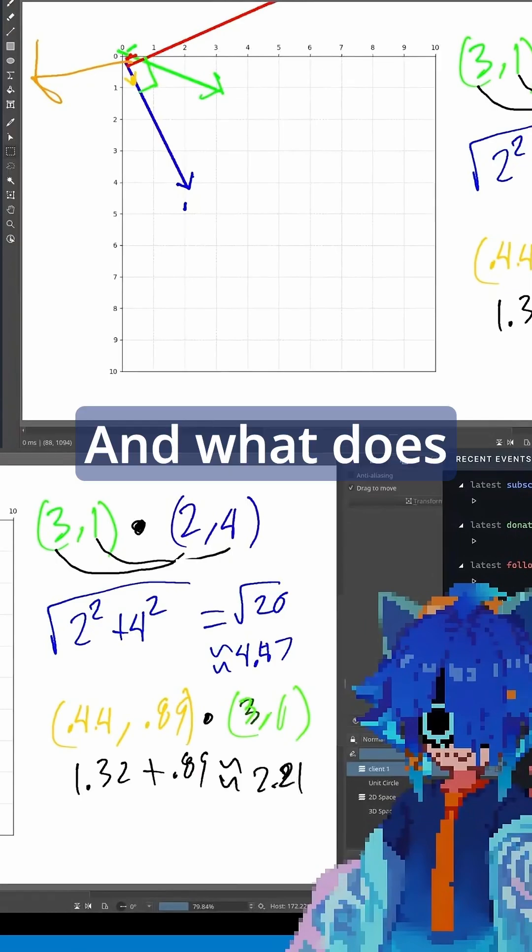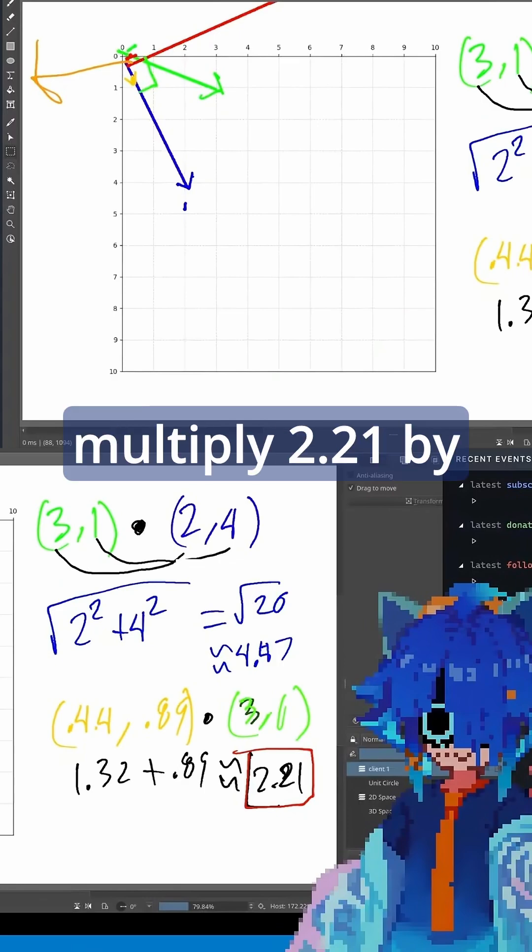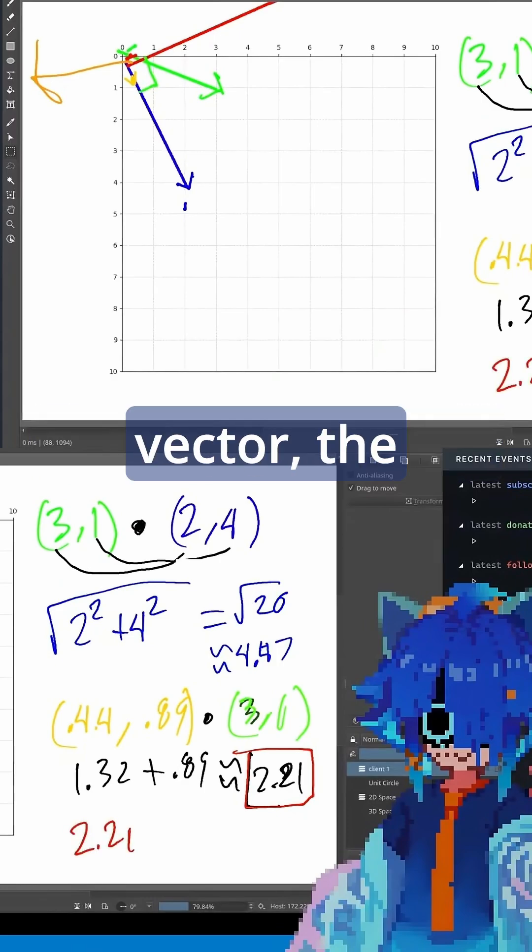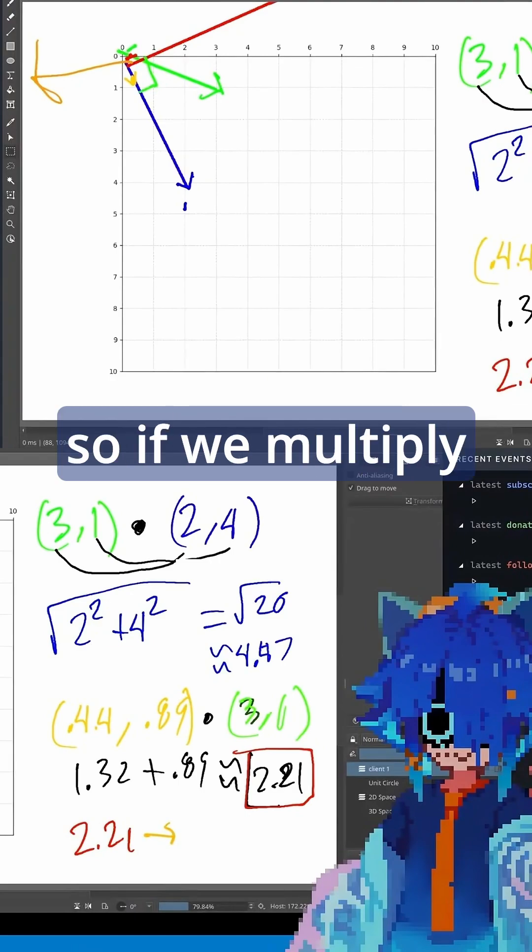And what does this 2.21 tell us? Well, if we multiply 2.21 by the orange normal vector, the orange unit vector, what happens?